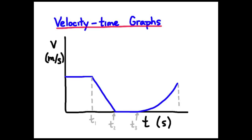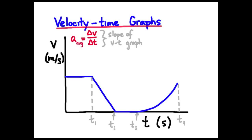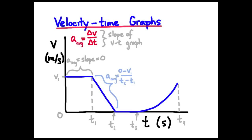Dividing my segments off into T1, T2, T3, and T4. Recall our definition for average acceleration: the graphical definition is the slope of the VT graph — that's what average acceleration is. The slope of the first segment is zero, so my average acceleration is zero for the first segment.